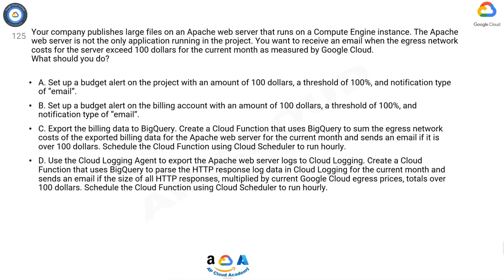Question 125. Your company publishes large files on an Apache web server that runs on a Compute Engine instance. The Apache web server is not the only application running in the project. You want to receive an email when the egress network costs for the server exceed $100 for the current month, as measured by Google Cloud. What should you do?